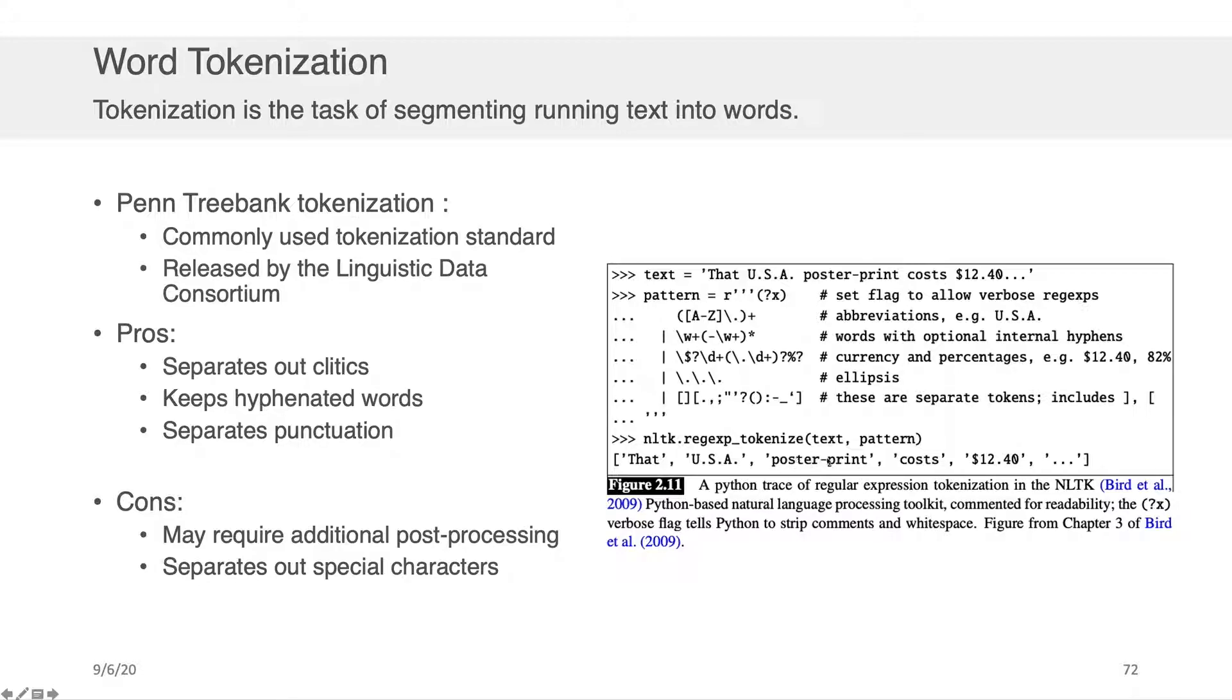The Penn Treebank tokenization that's built into NLTK understands that USA should be combined into a single token. The poster-print, despite it having a hyphen, should be put together and $12.40 should also be together. So there are lots of tools that implement Penn Treebank tokenization, which you can take advantage of. And if you'd like to even edit, for example, the regular expression shown there on the right-hand side to modify it for your own particular pre-processing needs, that's something that you can do as well.